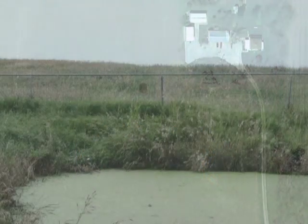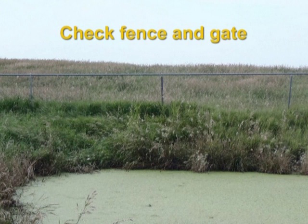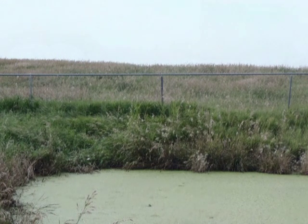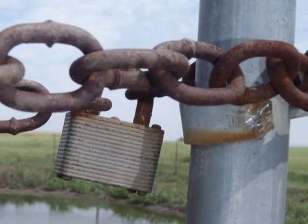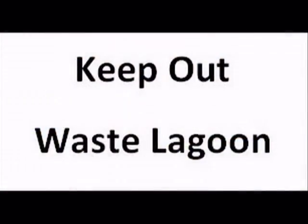Check that the fence and gate are in good repair. Repair sags, damage, or holes that would allow children or animals to get into the lagoon area. Make sure the gate fits well and the lock works. The fence should have a sign identifying the structure as a wastewater lagoon.